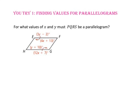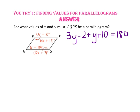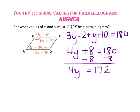Pause the video and do you-try number 1. For what values of X and Y must quadrilateral PQRS be a parallelogram? Since they give us angle measures, we want to focus on the properties of the angles of parallelograms. Opposite angles of a parallelogram are congruent; however, each expression has a different variable, so we don't want to write an equation with two variables. Let's focus on the property that consecutive angles of a parallelogram are supplementary. Angles E and H both have Y, so we write the equation 3Y minus 2 plus Y plus 10 equals 180. Combining like terms gives 4Y plus 8 equals 180. Subtract 8 from both sides: 4Y equals 172.